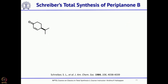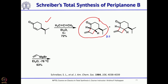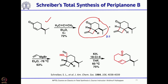A 2+2 cycloaddition between cyclohexenone and allene gave a mixture in a 2:1 ratio, with the major isomer being the required one. This compound was treated with vinyl magnesium bromide to give the allylic alcohol. Treatment with potassium hydride and 18-crown-6 triggered the anionic oxy-Cope rearrangement, giving the 10-membered ring fused with a 4-membered cyclobutene ring.